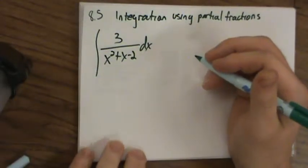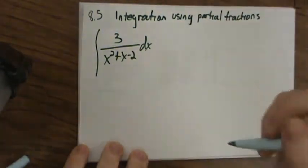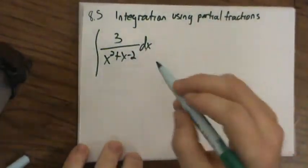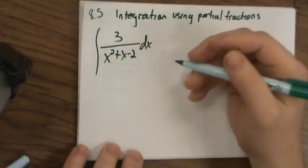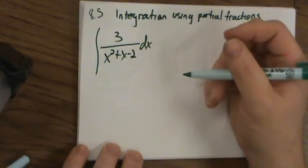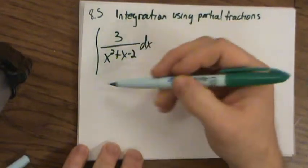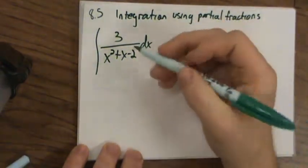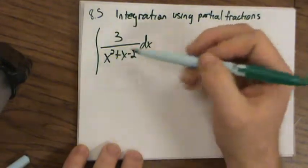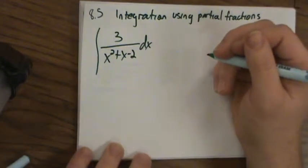Hello again. It's time for section 8.5. So let's take a look at our new strategy. Each section we introduce a new strategy for taking integrals that using our previous methods either is impossible or just cumbersome. So we could do this one with trig substitution, completing the square, do trig substitution, and so forth. It would be a little long though.